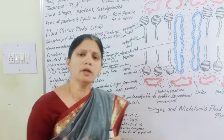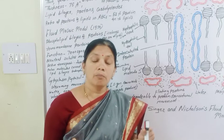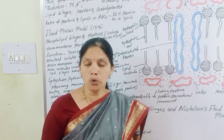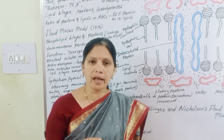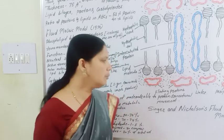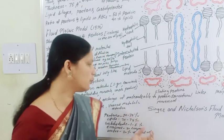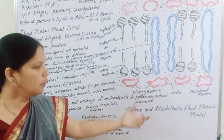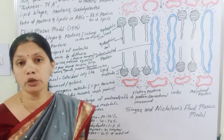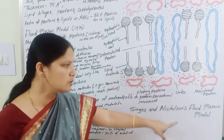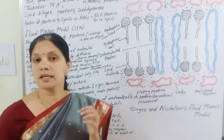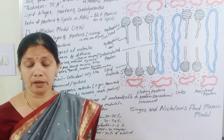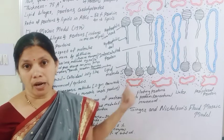There are different models proposed by different scientists to explain the structure of the plasma membrane. Out of these, the most accepted model is the fluid mosaic model, proposed by Singer and Nicholson in 1972. This is the most accepted model of the plasma membrane.